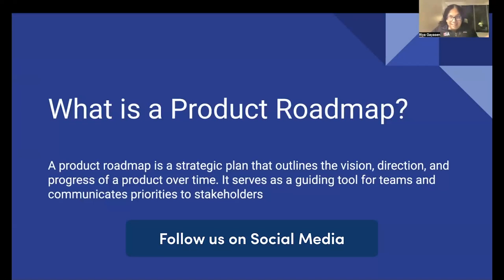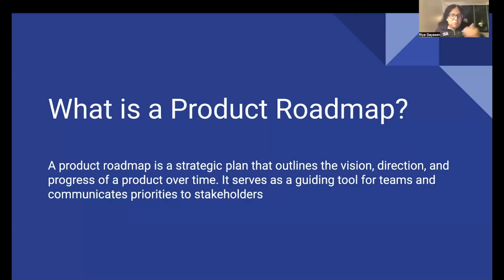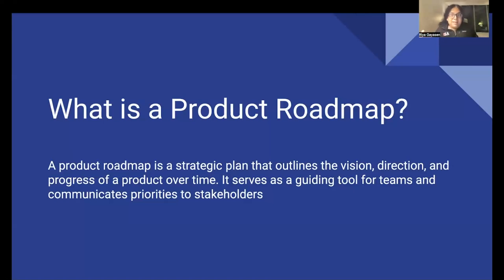So what exactly is a product roadmap? A product roadmap is basically a strategic plan that documents not just the vision of a product, but also the direction and the timeline of the product. As a document, it not only serves as a guide for product managers and engineers, but it also gives a proper plan to the marketing team and the sales team. It's extremely useful for literally every team that is involved in any part of the product lifecycle.